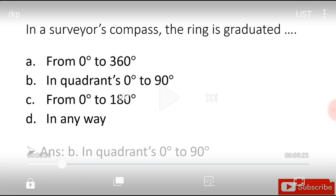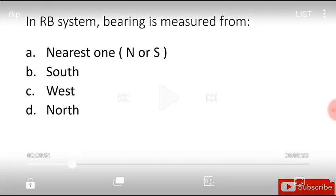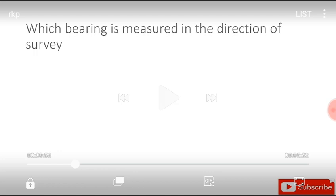In RV system, bearing is measured from nearest one north or south, south, west, or north, and the answer is nearest one north or south. Which bearing is measured in the direction of survey?